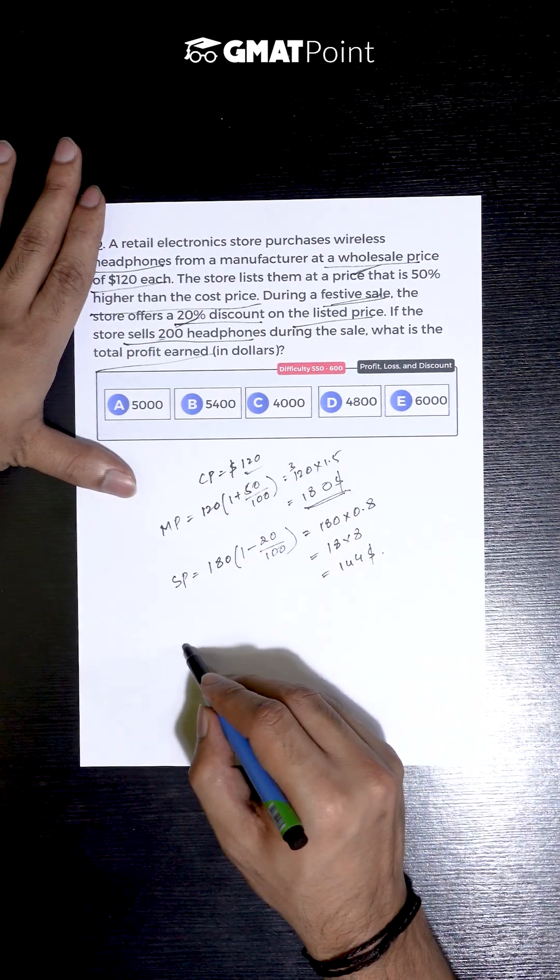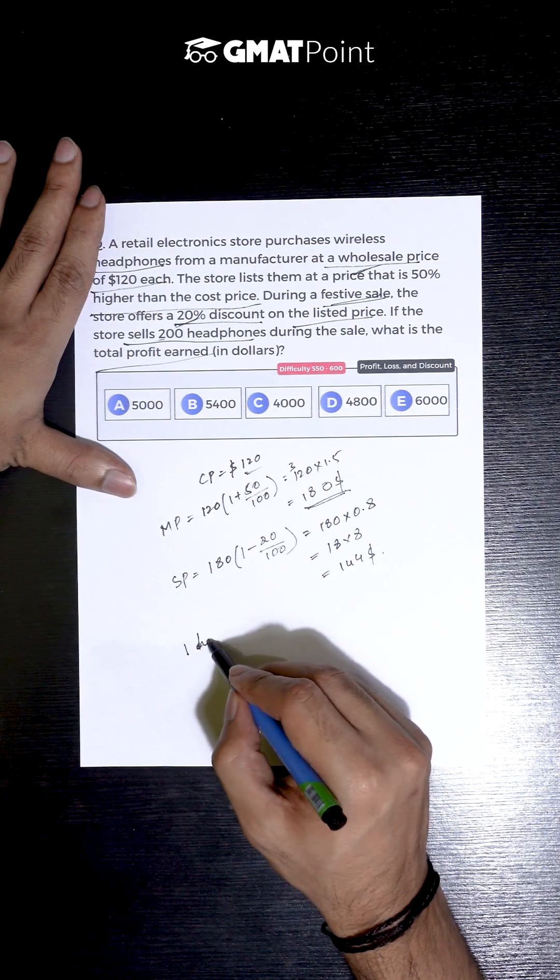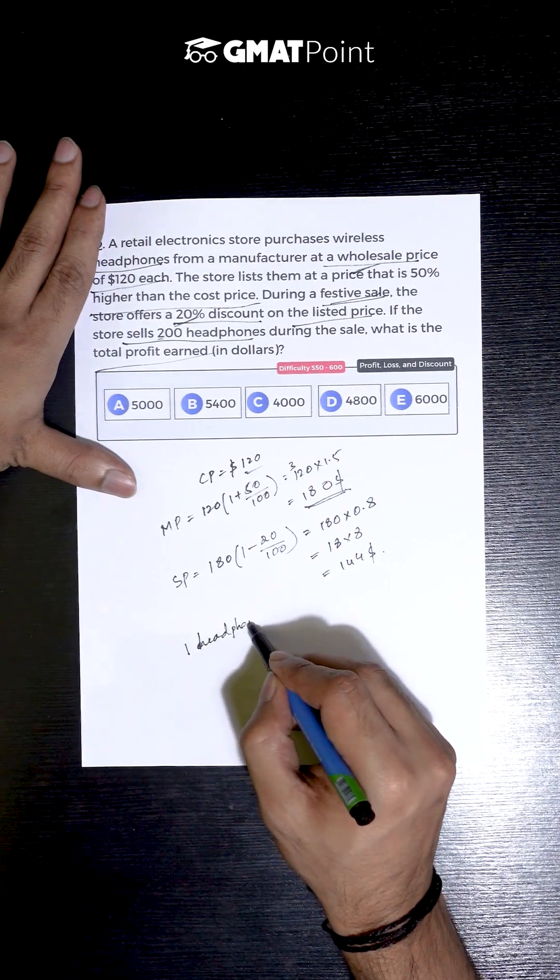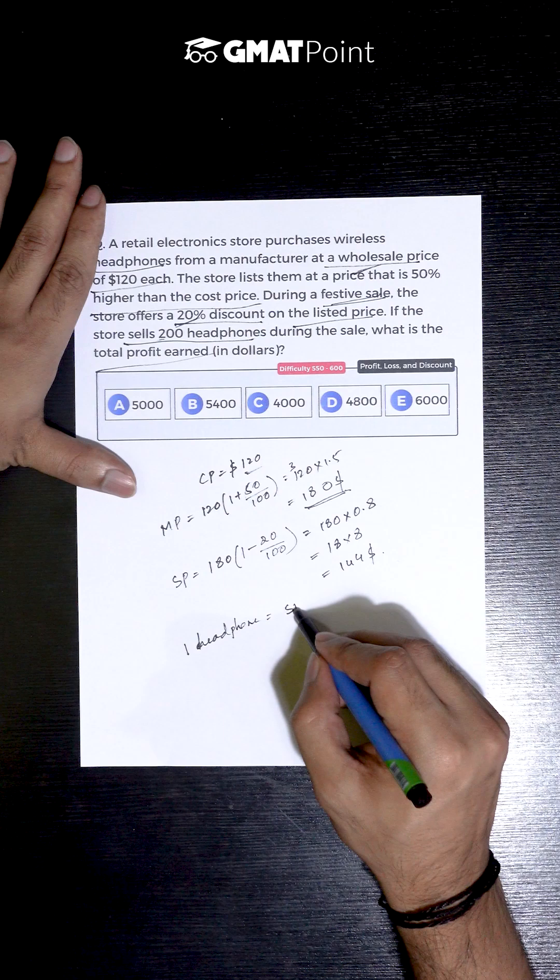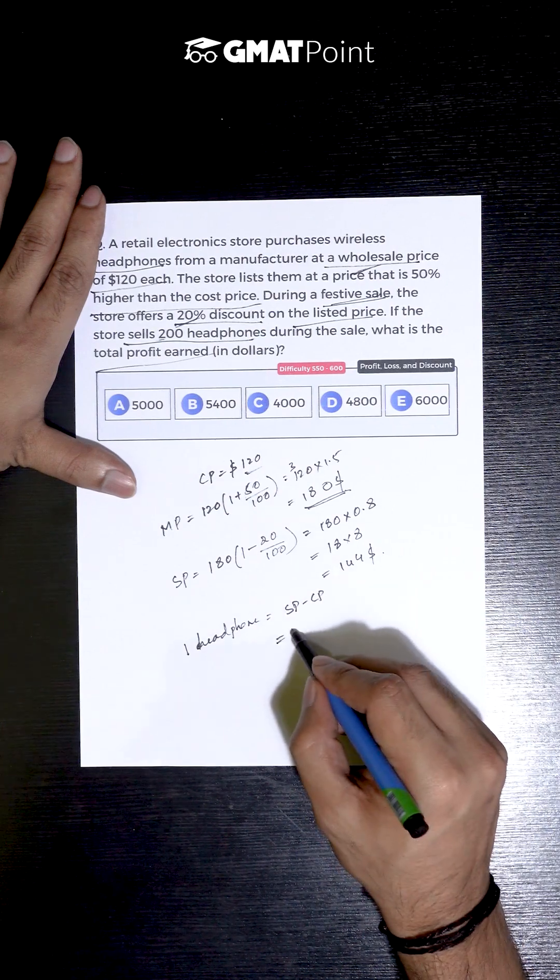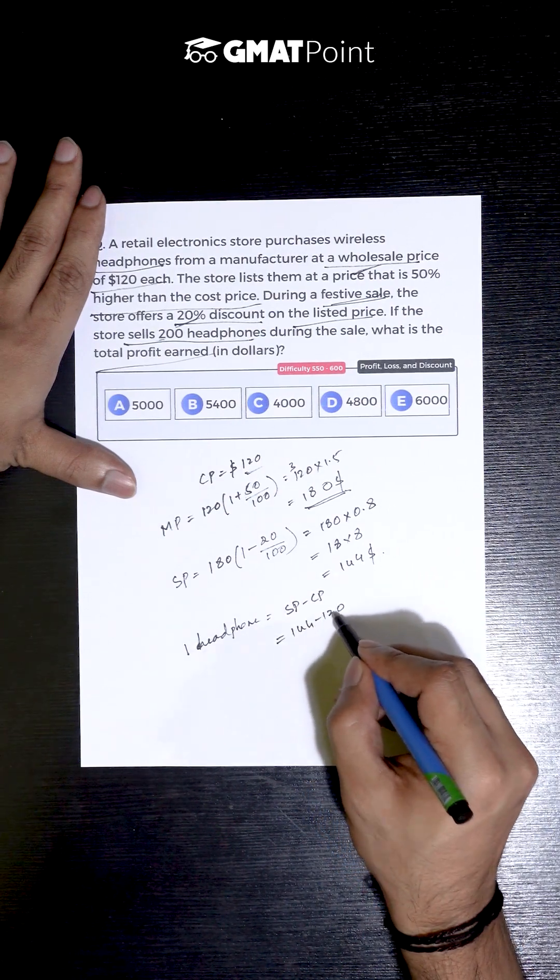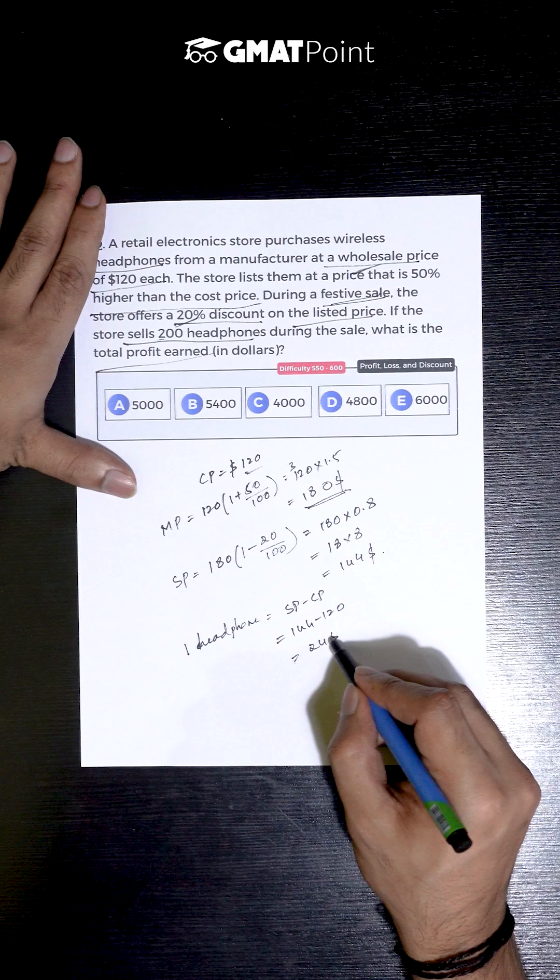So, on one headphone, the profit made can be calculated as selling price minus cost price, that is $144 - $120, which is $24.